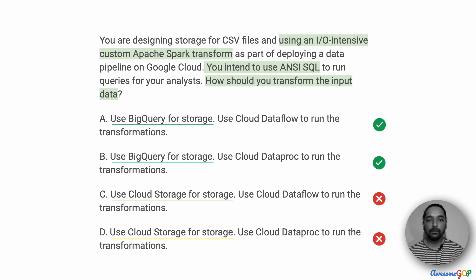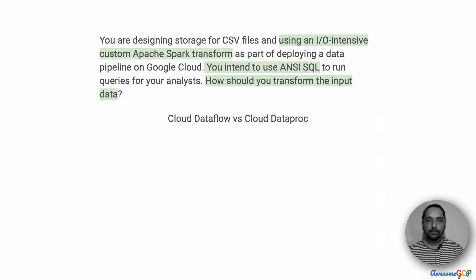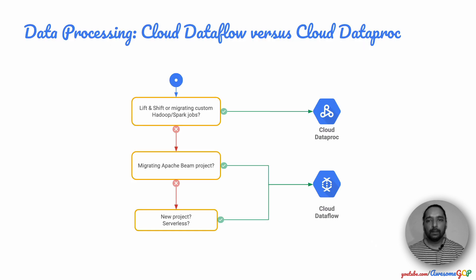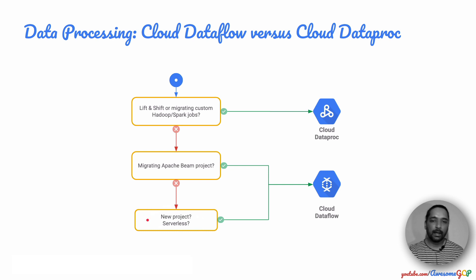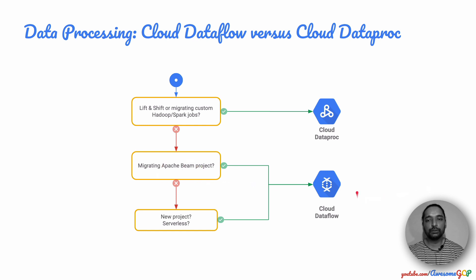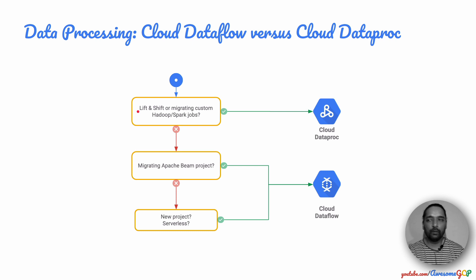Therefore, we can eliminate options C and D which recommend Cloud Storage. The second consideration is between Cloud Dataflow and Cloud Dataproc. For that, let's look at this flowchart. If we are doing a completely new Greenfield project and we want it to be serverless and fully managed, then Cloud Dataflow should be our choice. If we are migrating an Apache Beam project, then also it should be Cloud Dataflow. However, Cloud Dataproc is the right choice when we are working with Hadoop or Spark jobs. When we are lifting and shifting from on-prem or migrating custom jobs, then Cloud Dataproc should be our choice.